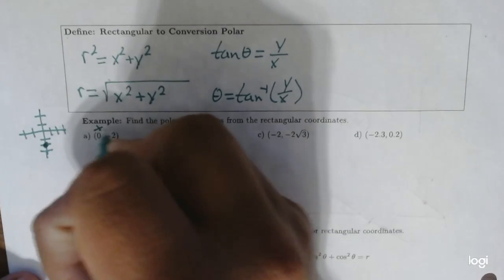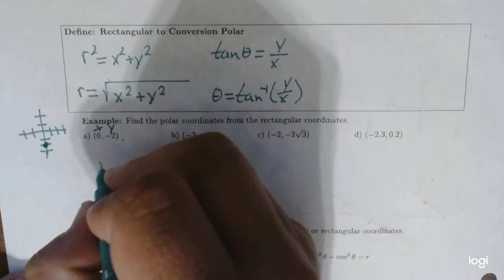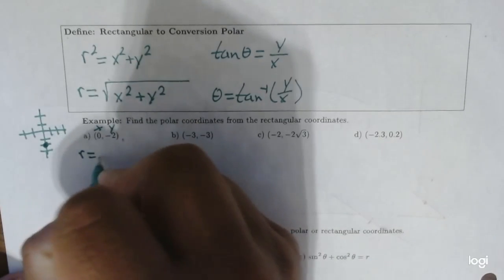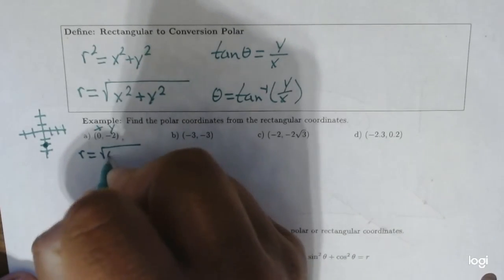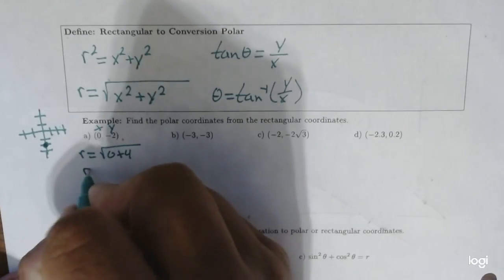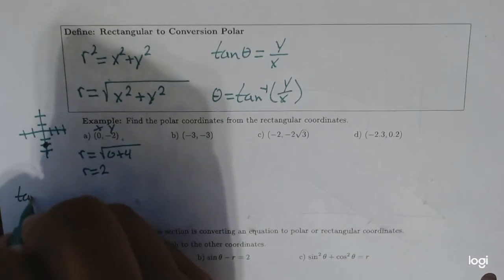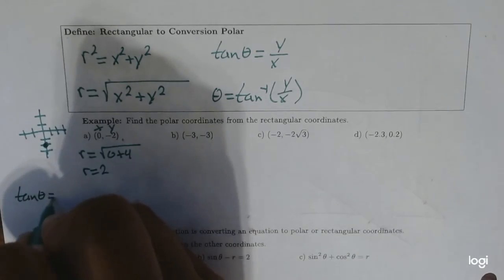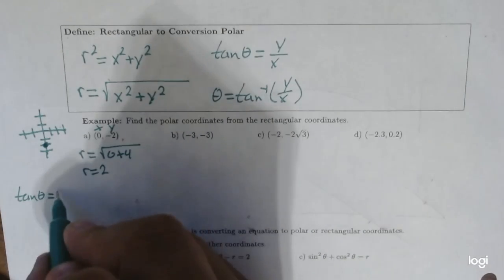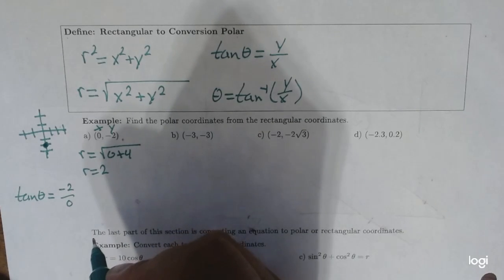So, x and y — I know my radius is going to be essentially 2. r is equal to the square root of 0 plus 2 squared, which is 4, so r is going to equal 2. And now for theta: tangent theta is equal to negative 2 over 0 — well, that's undefined.